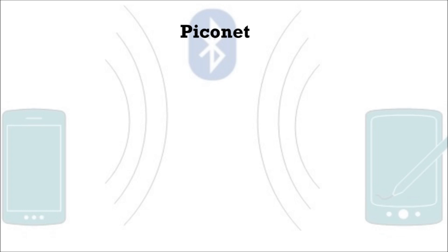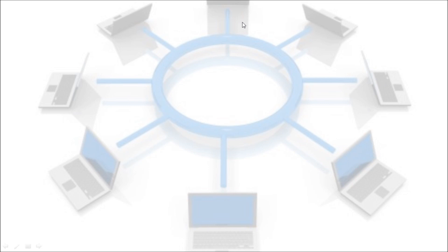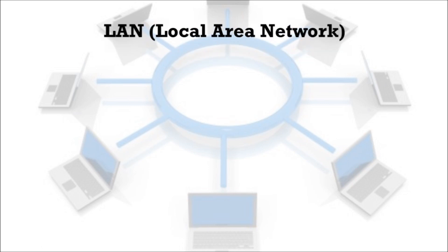An example of PAN is Piconet. It is an ad hoc network which links a wireless group of devices using Bluetooth technology protocol. It is a Bluetooth-enabled personal area network which may contain up to eight devices connected together in a master-slave fashion.